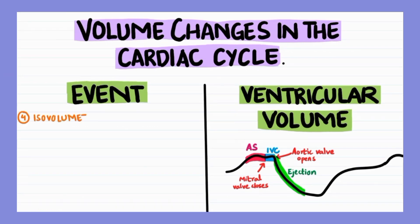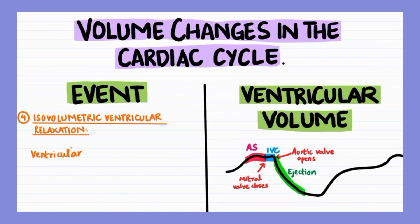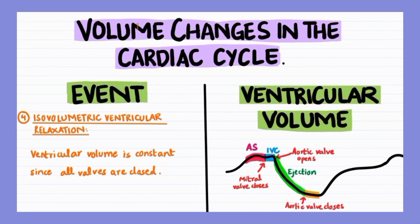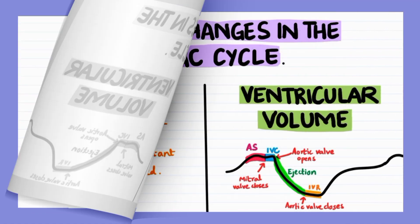The ejection phase is followed by isovolumetric ventricular relaxation, during which the ventricular volume remains constant since the aortic valve has closed after ejection and the atrioventricular valves have not yet opened. The area highlighted in orange represents isovolumetric ventricular relaxation.